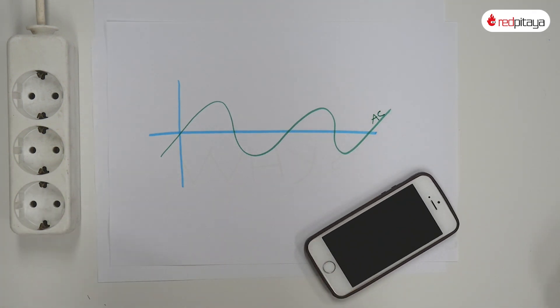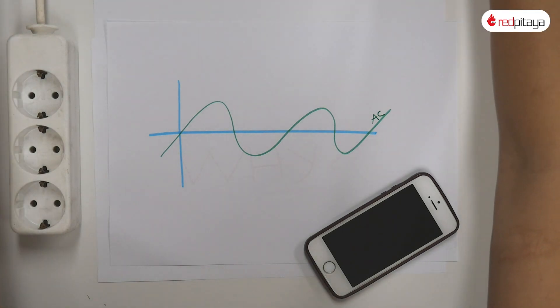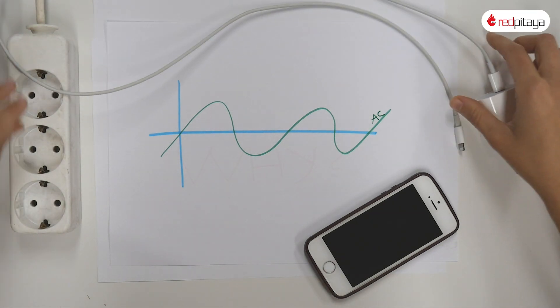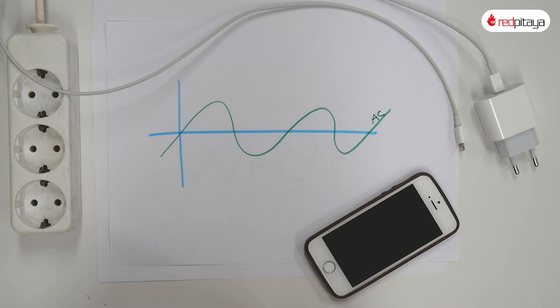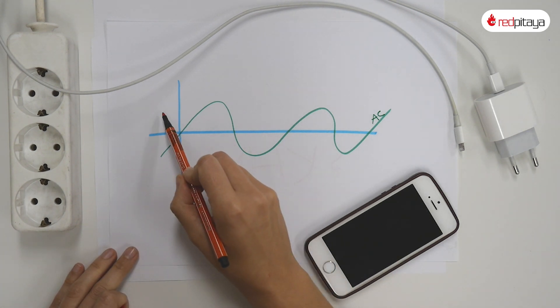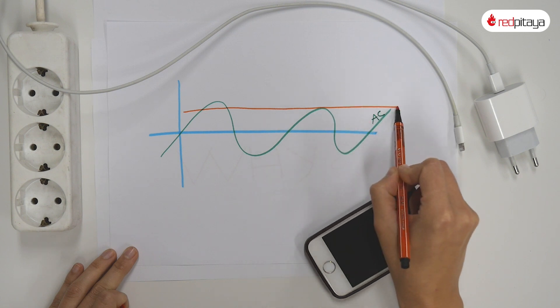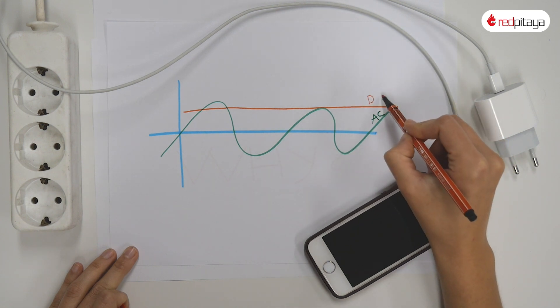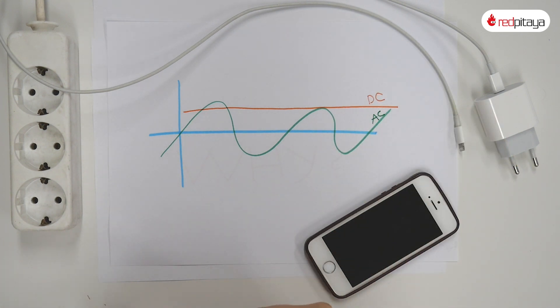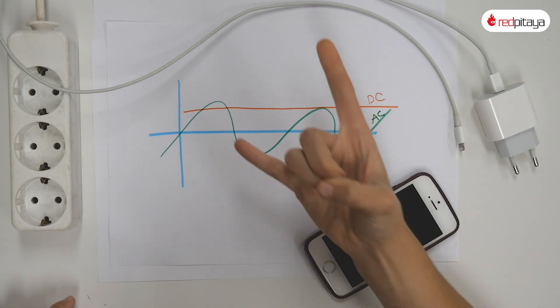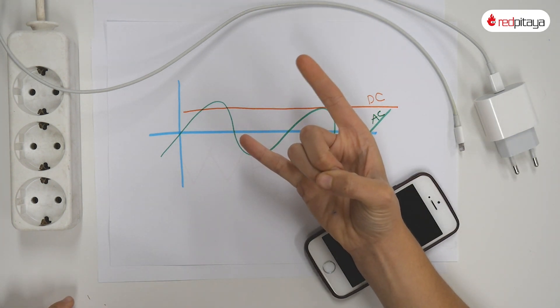Your phone, on the other hand, is charged with a DC voltage. DC stands for direct current. This means that voltage is constant. Obviously, we need some sort of AC-DC converter. So this was the why part. Now let's move to the how.